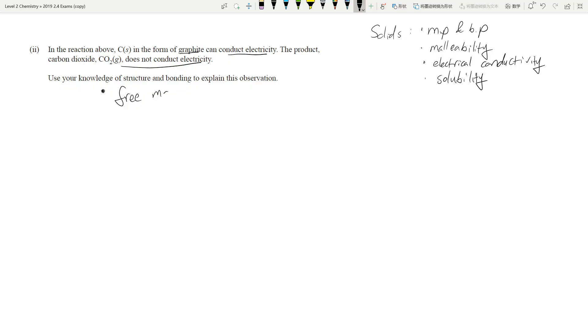The first thing is melting point and boiling point, then you have malleability, and then you have electrical conductivity. So if you look at electrical conductivity, as soon as you talk about electrical conductivity, you must refer to the free moving charged particles. You must have free moving charged particles, either free moving electrons or free moving ions, because you need these to carry charges.